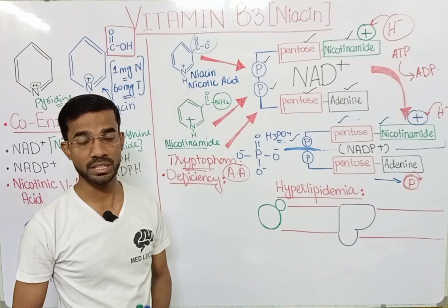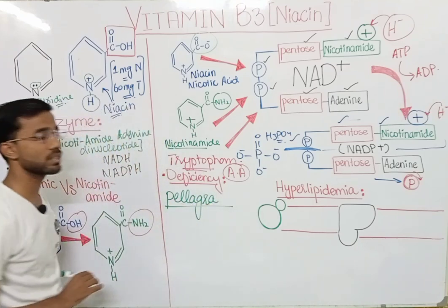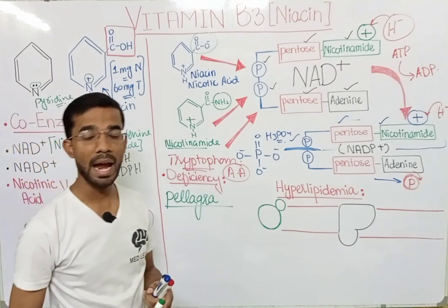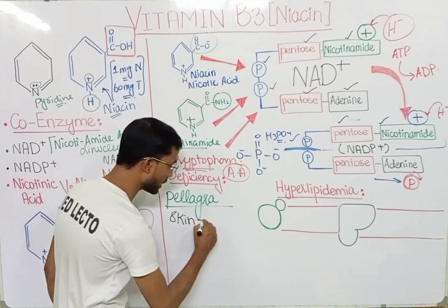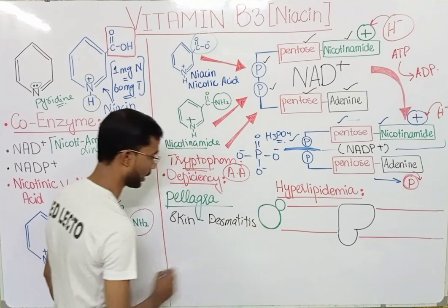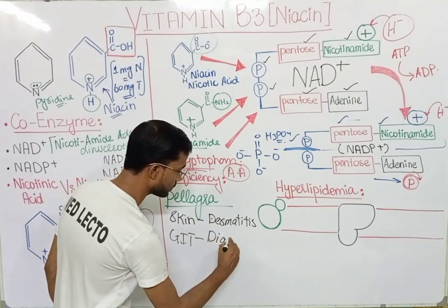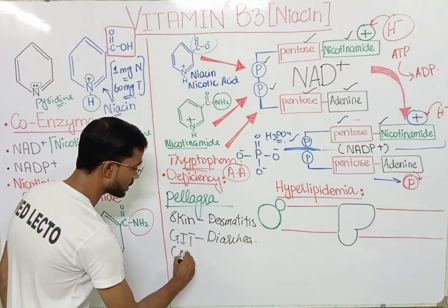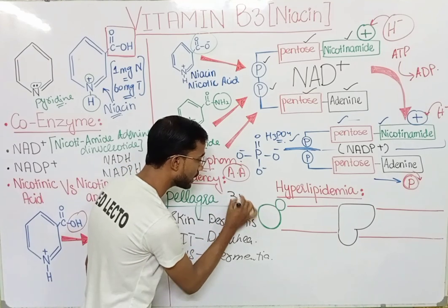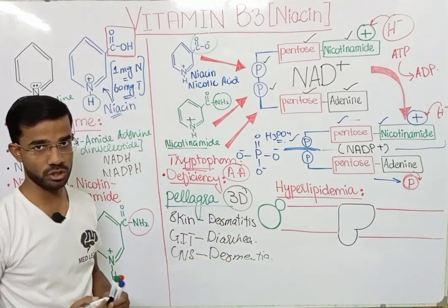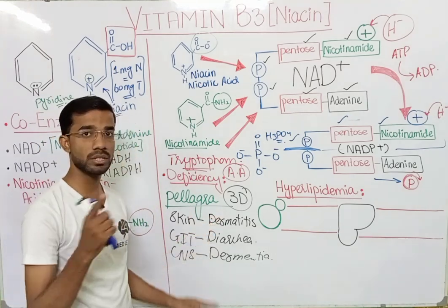When you will see the deficiency of the niacin, most importantly you will see pellagra. In pellagra you will see three most important things: defects of the skin, GIT, and the nervous system. At the level of the skin you will see dermatitis. Next you will see the GIT tract, and in that situation you will see diarrhea. And in the CNS, the central nervous system, you will see dementia. So these are basically the three D's: dermatitis, diarrhea, and dementia. And if you see severe deficiency of the niacin, you can even see death — and death also starts from the D.